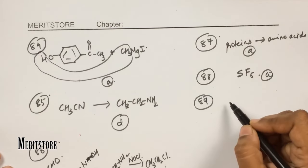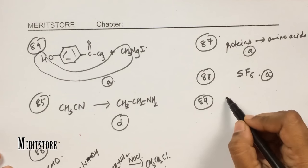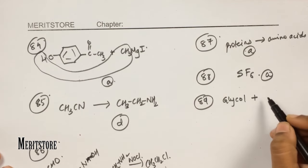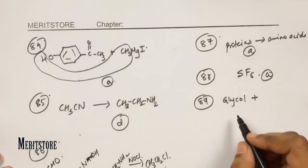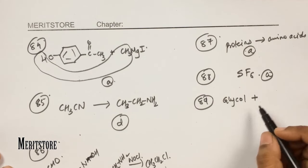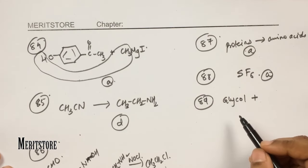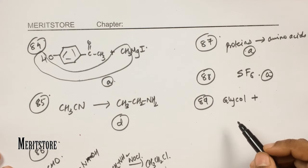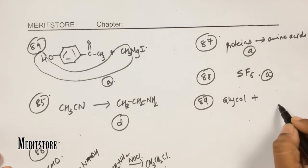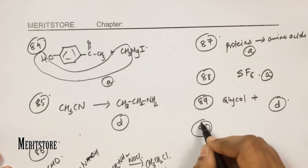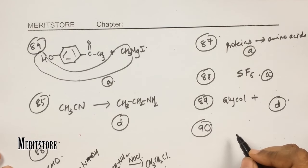Question number 89: Dacron is a polymer of ethylene glycol and terephthalic acid. It is also called Terylene fiber. Therefore option D.